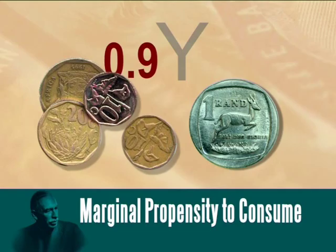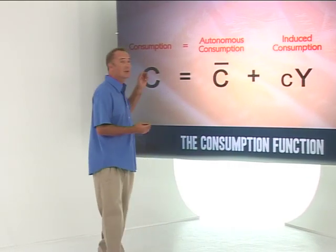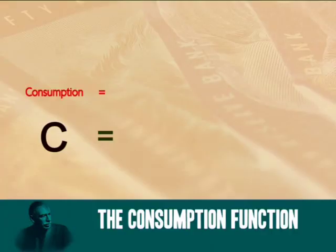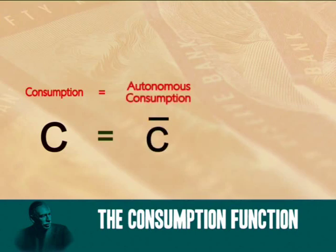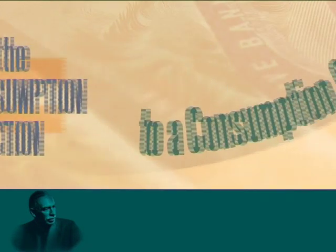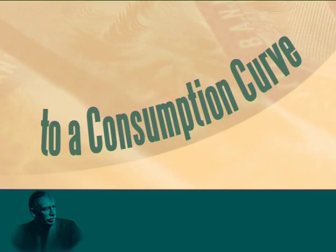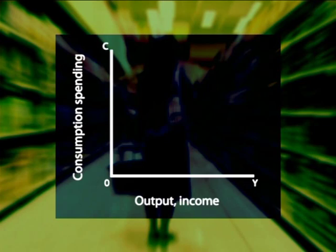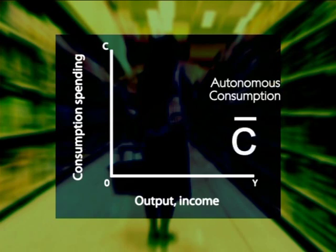The consumption function states that consumption spending, C, is made up of autonomous consumption C-bar, plus induced consumption, which is our marginal propensity to consume, small c, multiplied by our income, Y. We can illustrate this consumption function as a graph. The horizontal axis reflects the level of income, Y, and the vertical axis reflects consumption spending, C. Autonomous consumption, C-bar,